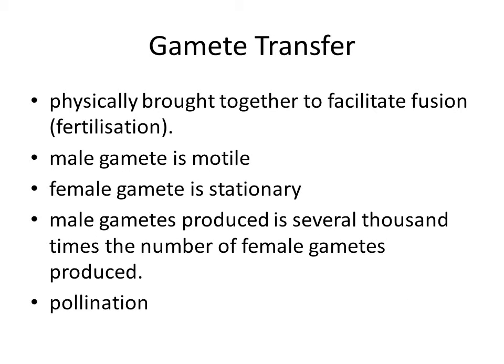After their formation, male and female gametes must be physically brought together to facilitate fusion or fertilization. In a majority of organisms, the male gamete is motile in nature and the female gamete is stationary. Exceptions are a few fungi and algae in which both types of gametes are motile. There is a need for a medium through which the male gametes move. In several simple plants like algae, bryophytes, and pteridophytes, water is the medium through which gamete transfer takes place. A large number of male gametes, however, fail to reach the female gametes. To compensate for this loss, the number of male gametes produced is several thousand times the number of female gametes. In plants, this process is called pollination.